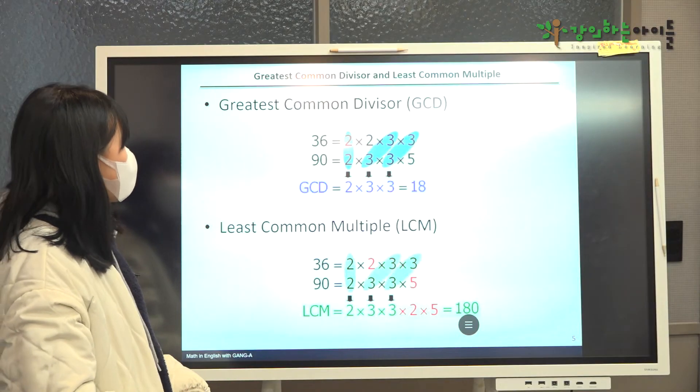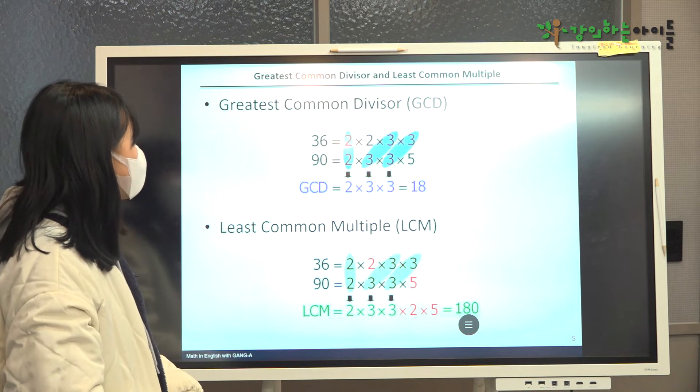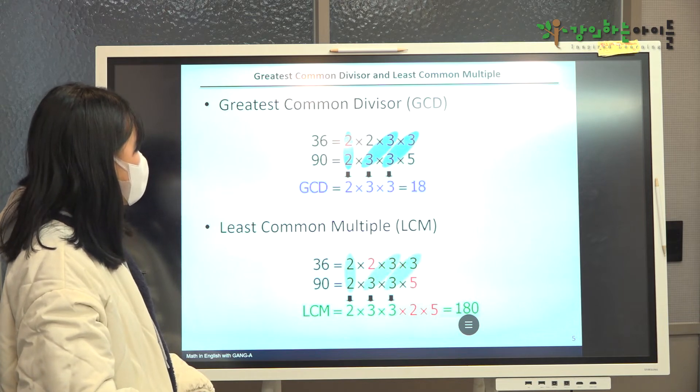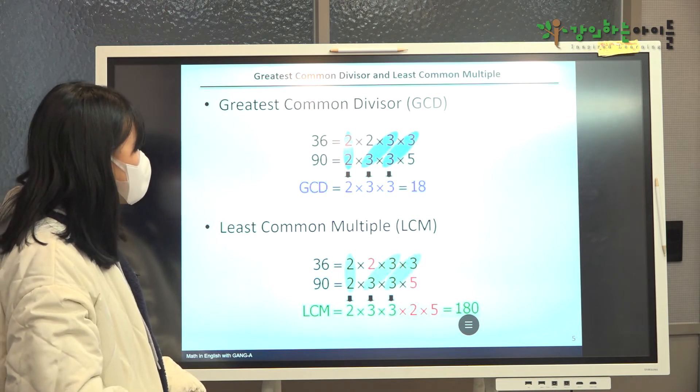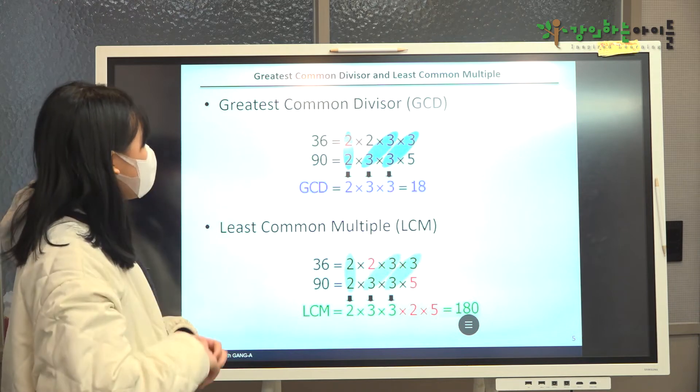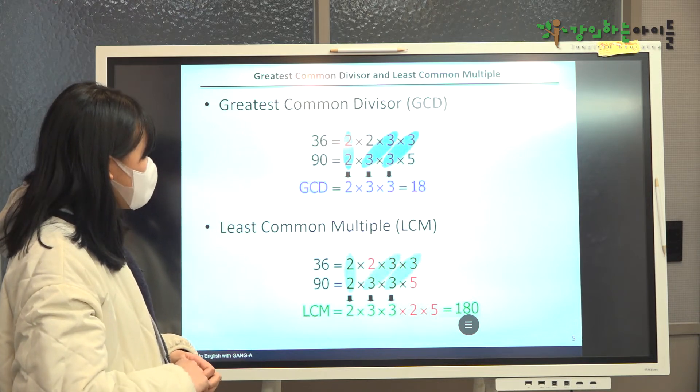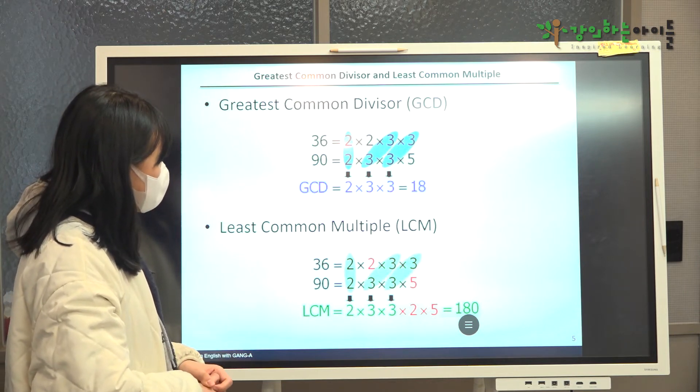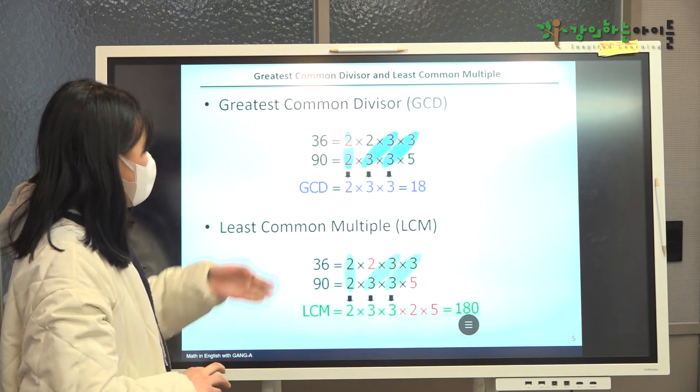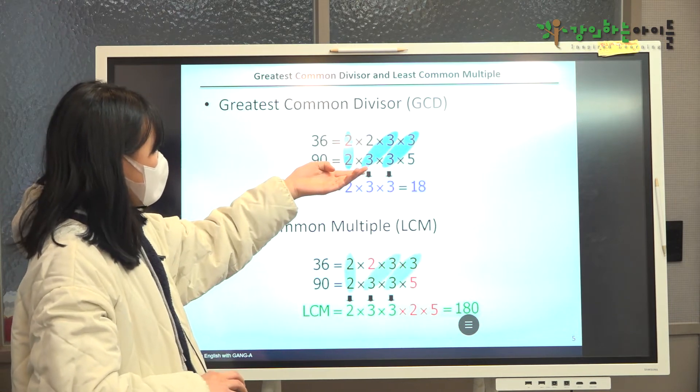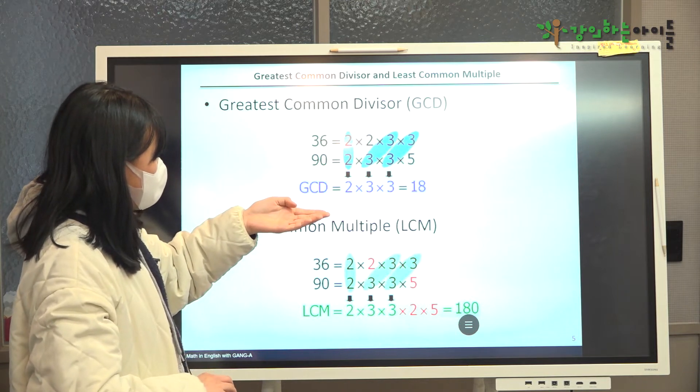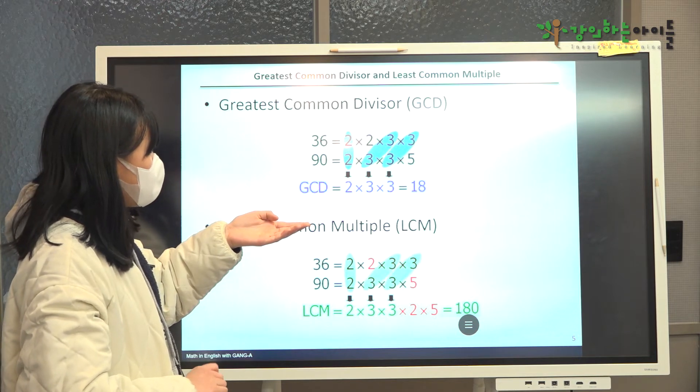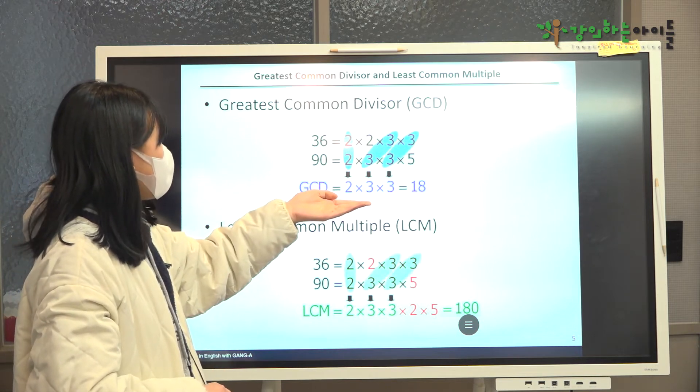I will introduce systematic techniques for finding the greatest common divisor and least common multiple. Let's begin with finding the greatest common divisor of 36 and 90. The first step is to rewrite each number as a product of prime numbers, and then all of the factors that these two numbers have in common are circled, as shown here. Finally, by taking the product of all of the common factors, we get 18 as the greatest common divisor.